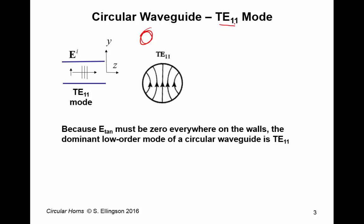It's one way to see how it comes about is to just imagine an electric field which is polarized like this in the center of the waveguide, and then realize that E tan, the tangential component of the electric field, has to be zero everywhere on the waveguide walls.